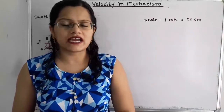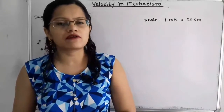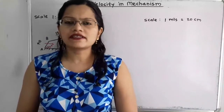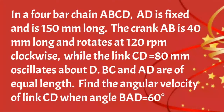In this video, we are going to understand how to decide the direction for the angular velocity from the velocity diagram. The given problem: In a 4-bar chain ABCD, AD is fixed and is 150 mm long. The crank AB is 40 mm long and rotates at 120 rpm clockwise, while link CD 80 mm oscillates about D. BC and AD are of equal length. Find the angular velocity of link CD when angle BAD is equal to 60 degrees.